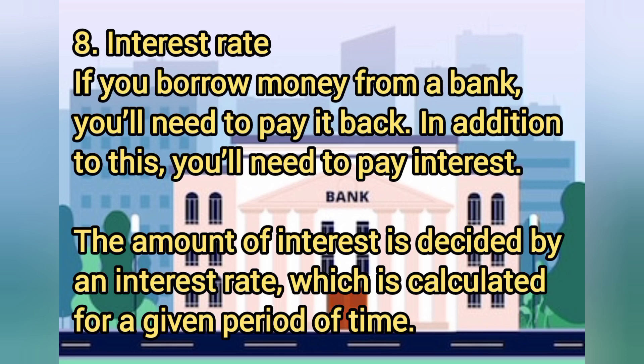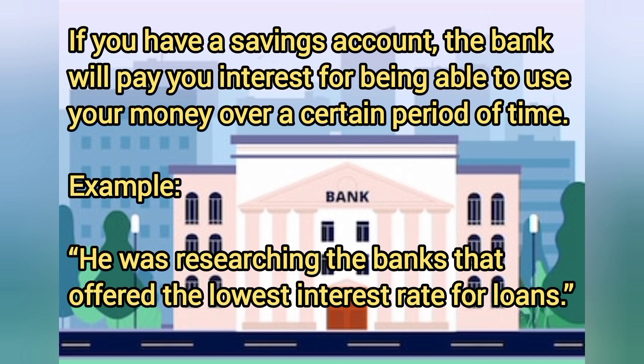Eight: interest rate. If you borrow money from a bank, you'll need to pay it back — in addition to this, you'll need to pay interest. The amount of interest is decided by an interest rate, which is calculated for a given period of time. If you have a savings account, the bank will pay you interest for being able to use your money over a certain period of time. Example: he was researching the banks that offered the lowest interest rate for loans.